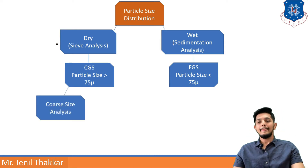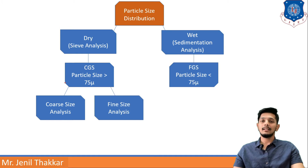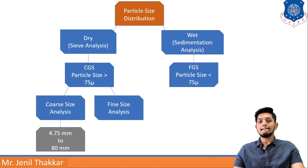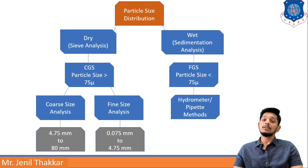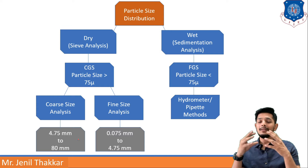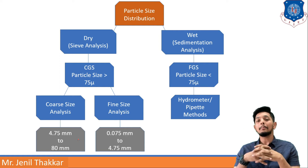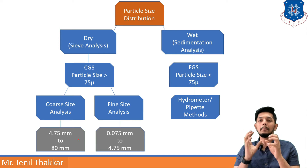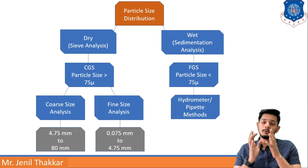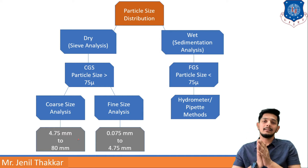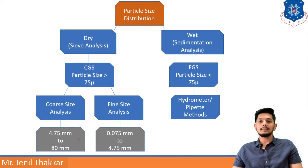For dry sieve analysis, we can do coarse size analysis and fine size analysis. For coarse size analysis, you need 4.75 to 80 mm size of soil; for fine size analysis, you need 0.075 to 4.75 mm size of soil. In wet analysis, you should use the hydrometer method or PET method. Both are different but almost similar methods, and through them you can distribute the sizes of fine grained soils.